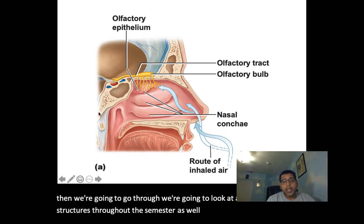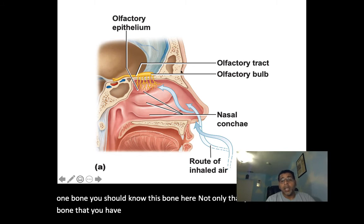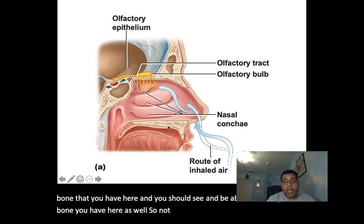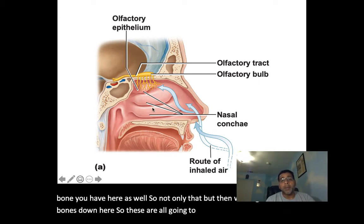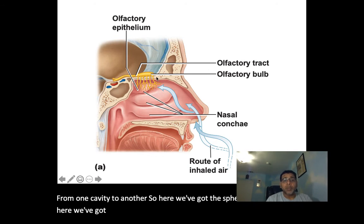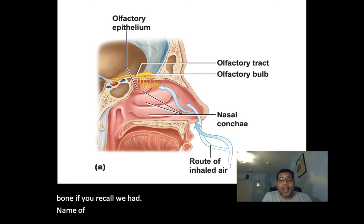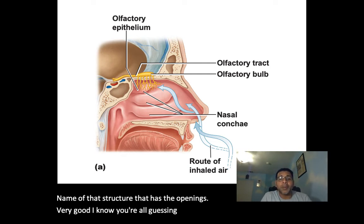You should be able to identify several bones creating different boundaries between cavities. Here we've got the sphenoid bone, the frontal bone, and between them the ethmoid bone. If you recall, the structure with the openings is the cribriform plate with the olfactory foramina or cribriform foramina.